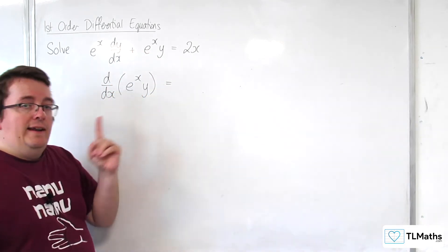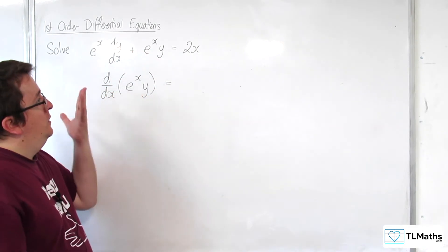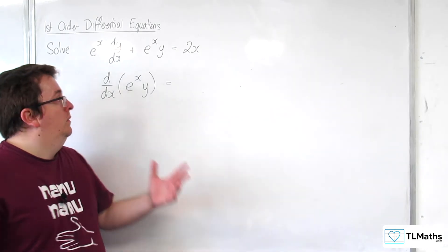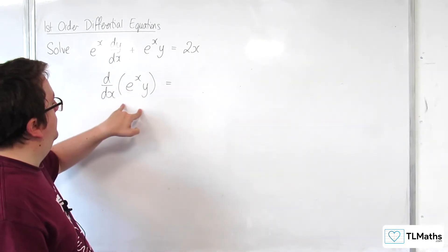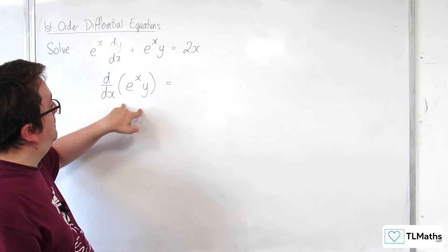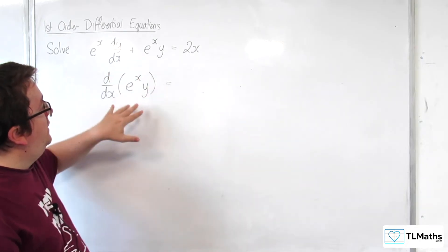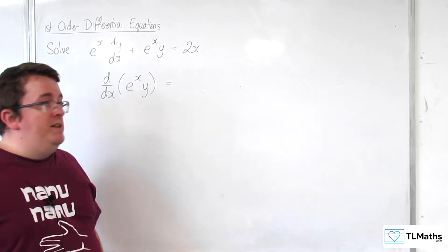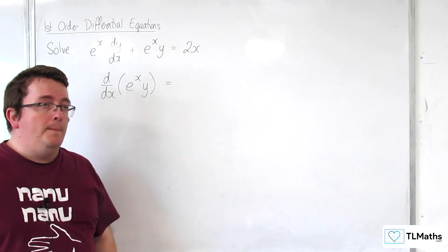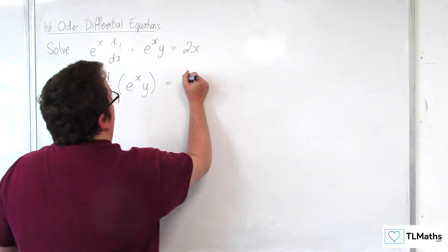So, actually, that left-hand side is perfectly using the product rule backwards. So, that left-hand side is precisely d by dx of e to the x times y. The right-hand side is still 2x.